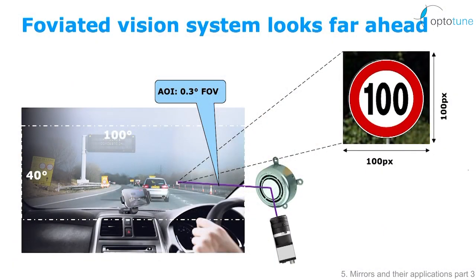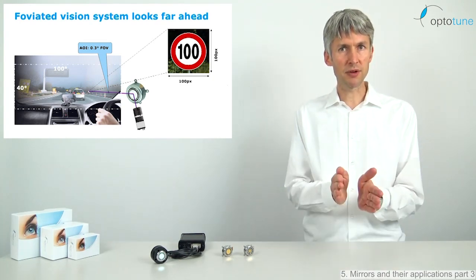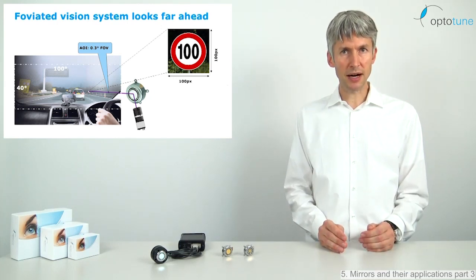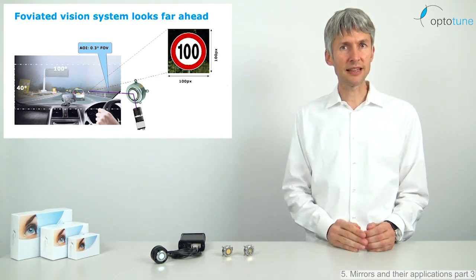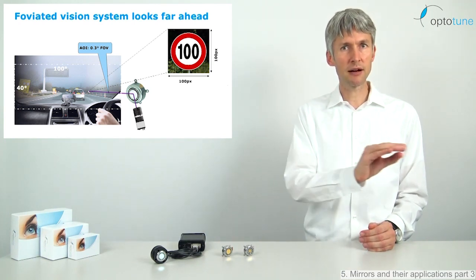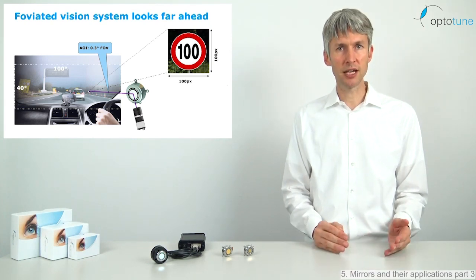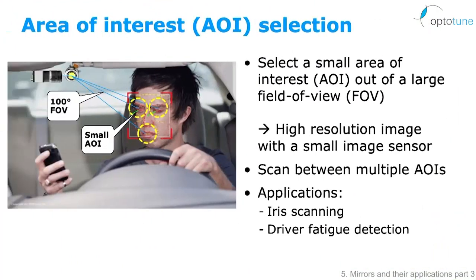Another compelling application for cars would be a foveated vision system that imitates the human vision. For example, a street sign in a distance of 100 meters corresponds to 0.3 degree optical field of view. You need about the resolution of 100 pixels by 100 pixels to identify the street sign without error. If you assume that the street sign is placed anywhere within a field of view of 100 degrees by 40 degrees, you would require a 400 megapixel camera in order to do the job without our mirror. Also inside a car, area of interest selection would be beneficial too. For example, scan between multiple areas of interest and take high-resolution images. Applications are iris scanning or driver fatigue detection.